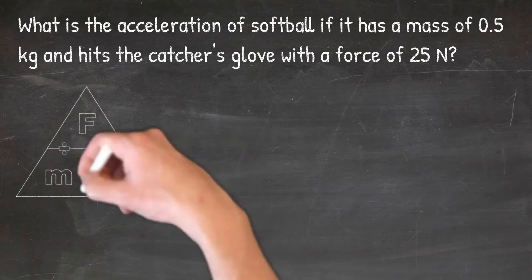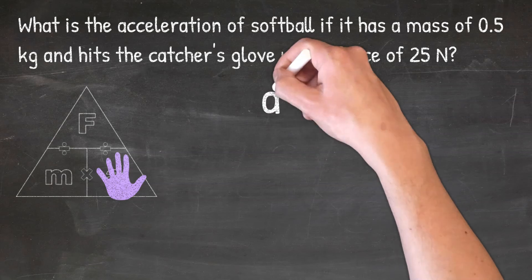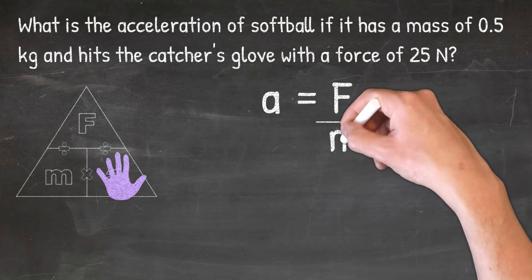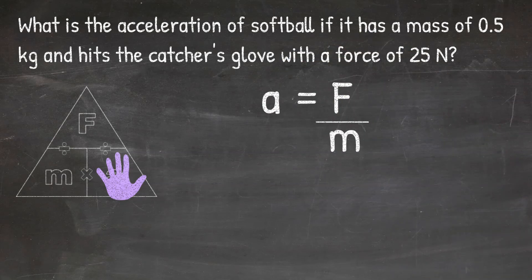So when I look at my triangle, I'm going to cover up the letter A, and that tells me to do force divided by mass. So from here, I can just pull the force and the mass from the problem and plug them into my formula, and that gives me 25 divided by 0.5.